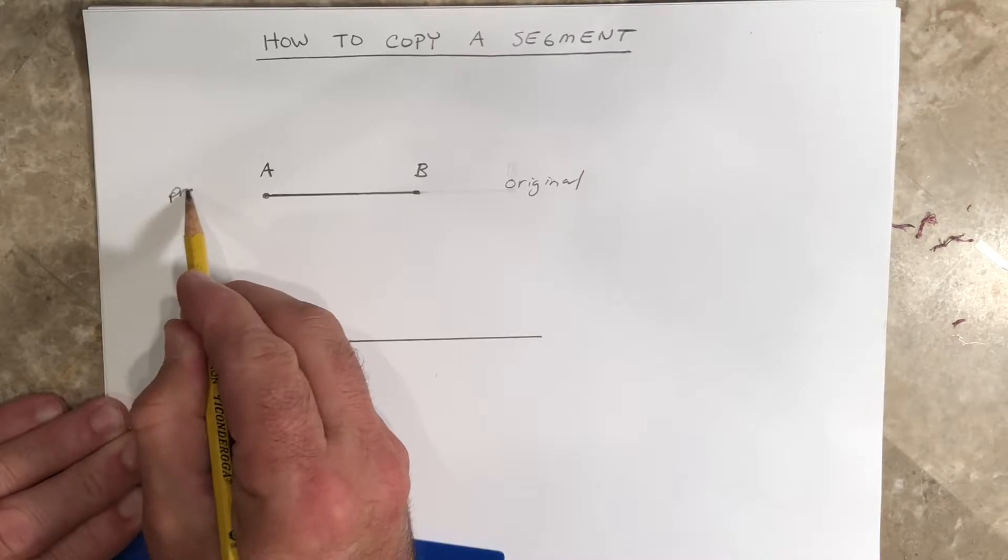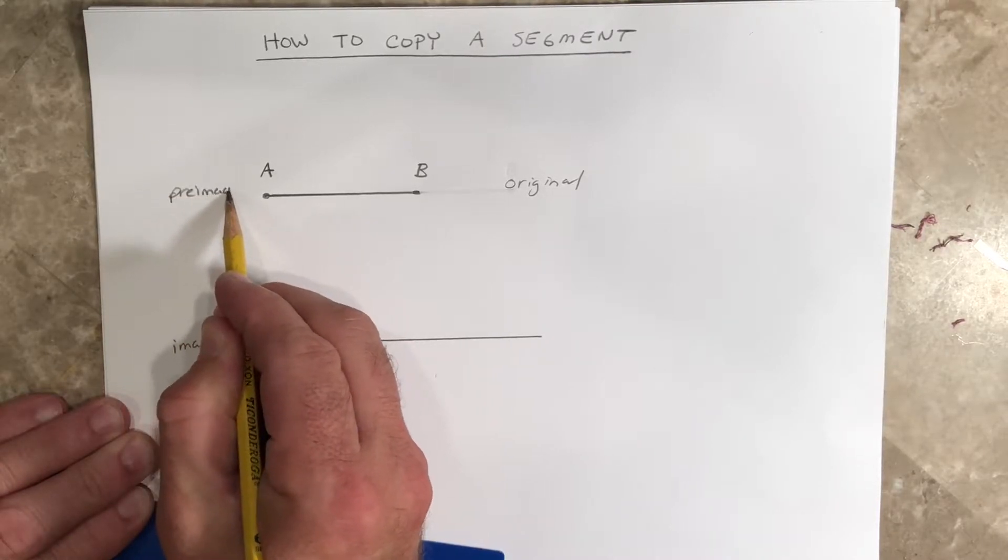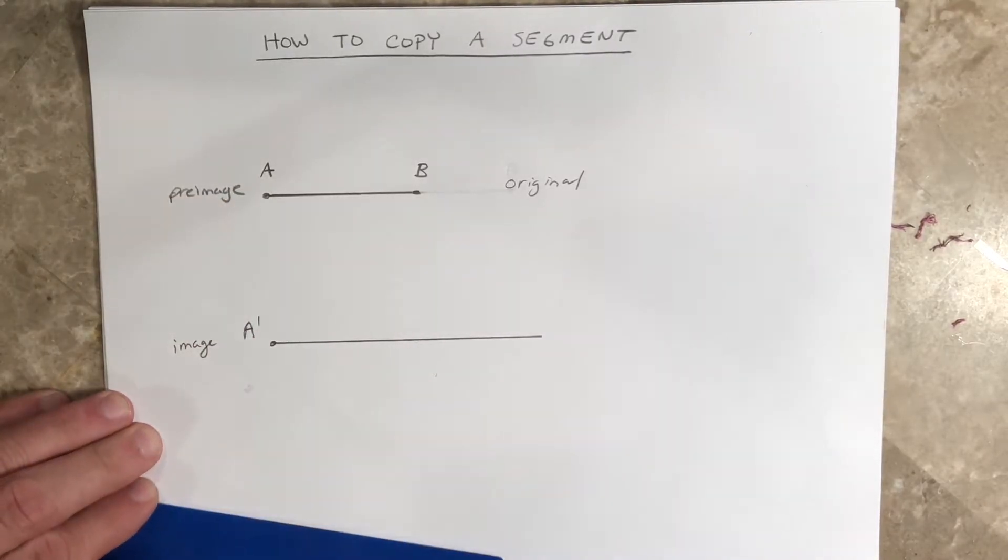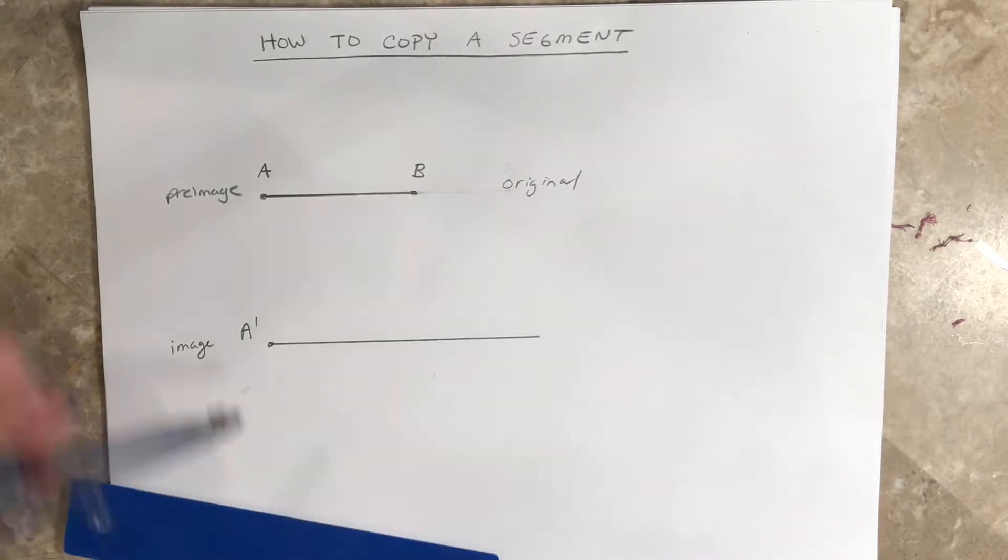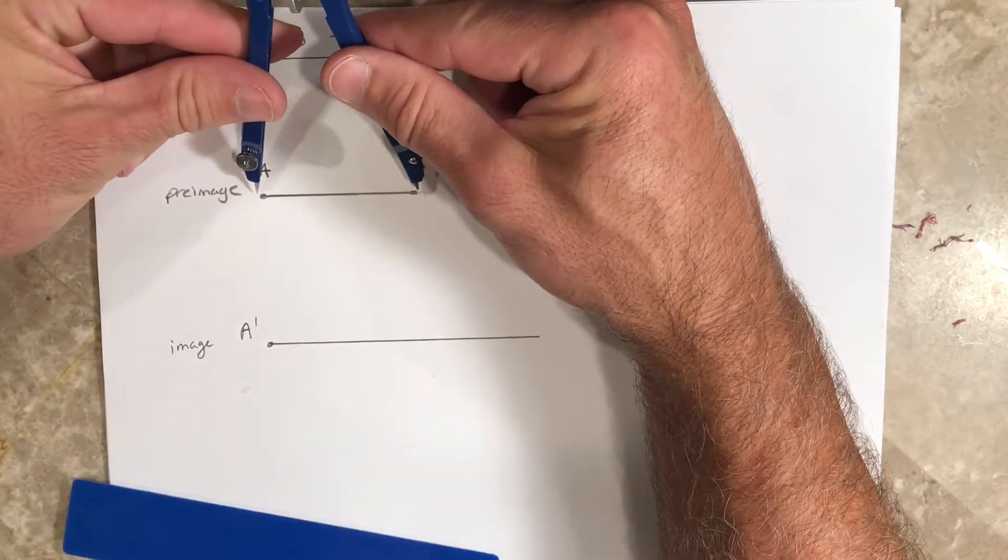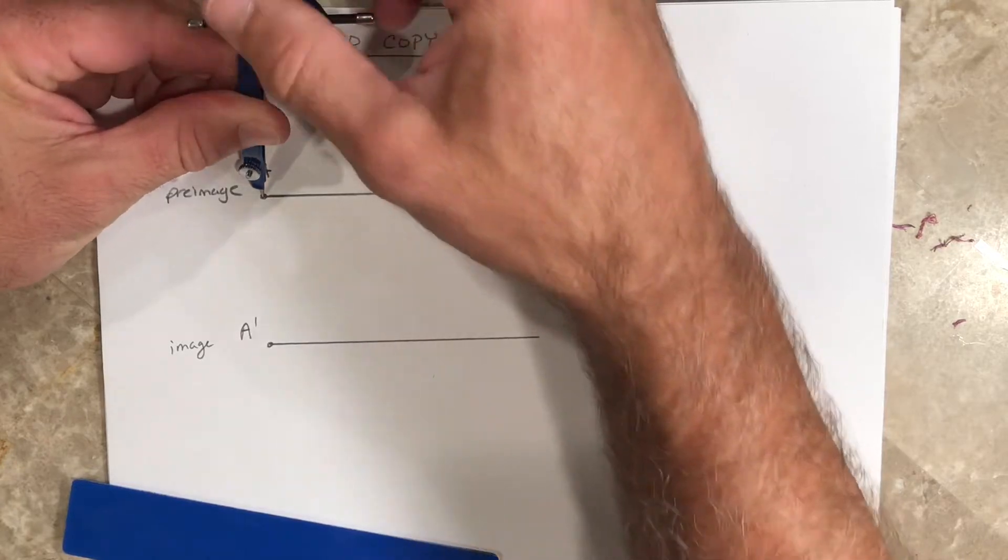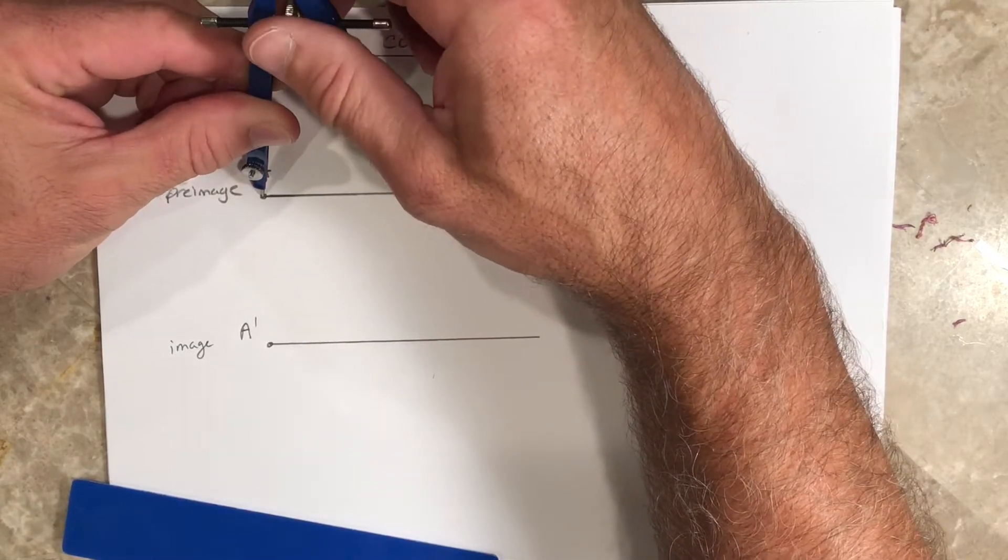So then to get the length of it, you're basically just going to take your compass and bring it right up here. Put your point on A and bring your other part right to where it lines up nicely.